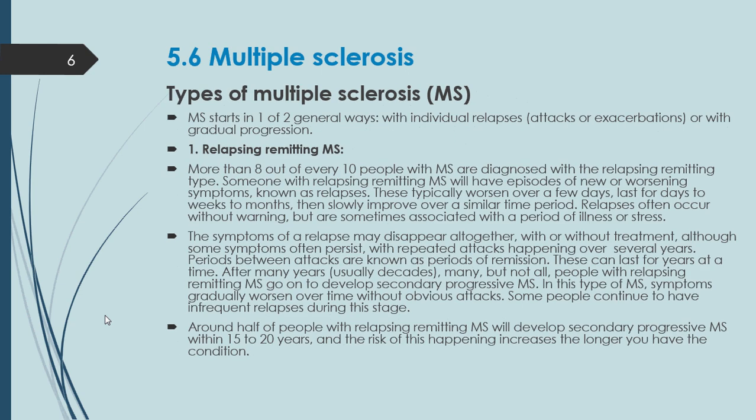Types of Multiple Sclerosis: MS starts in one of two general ways — with individual relapses (also called attacks or exacerbations), or with gradual progression.